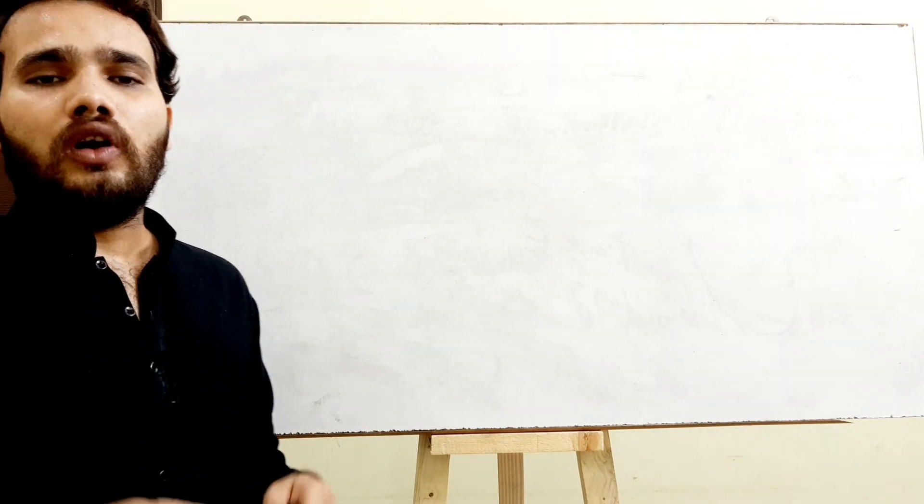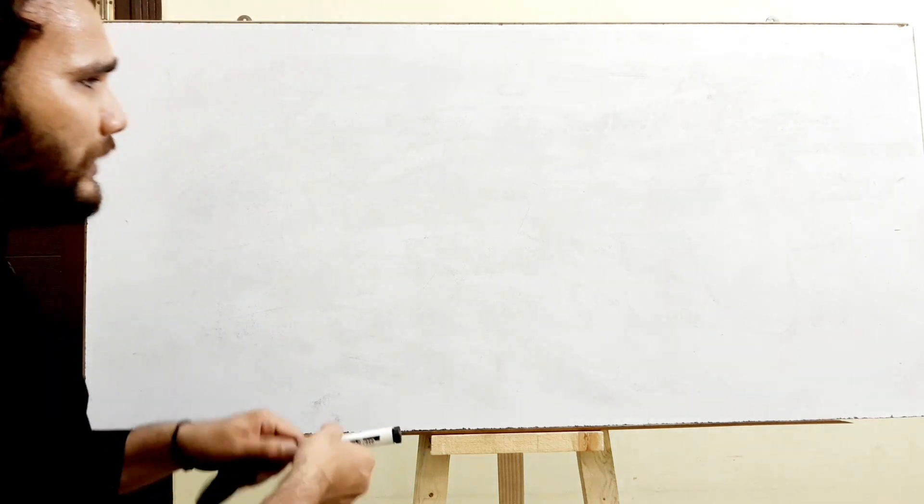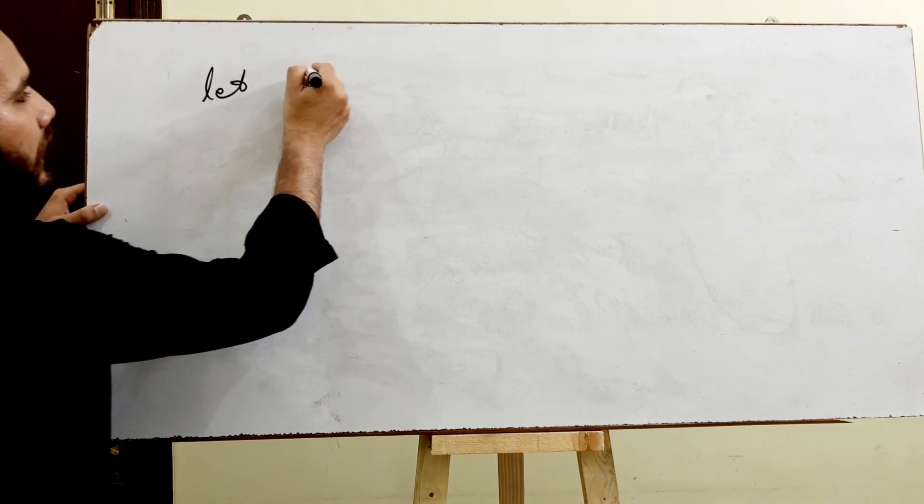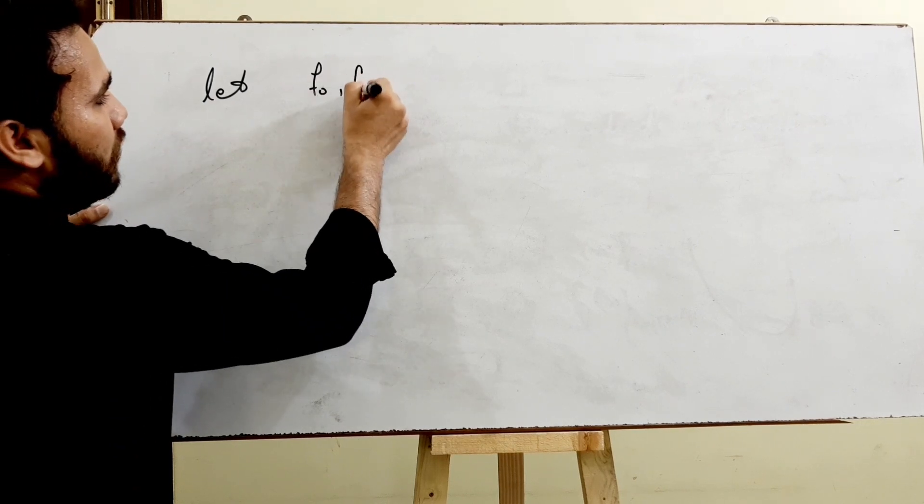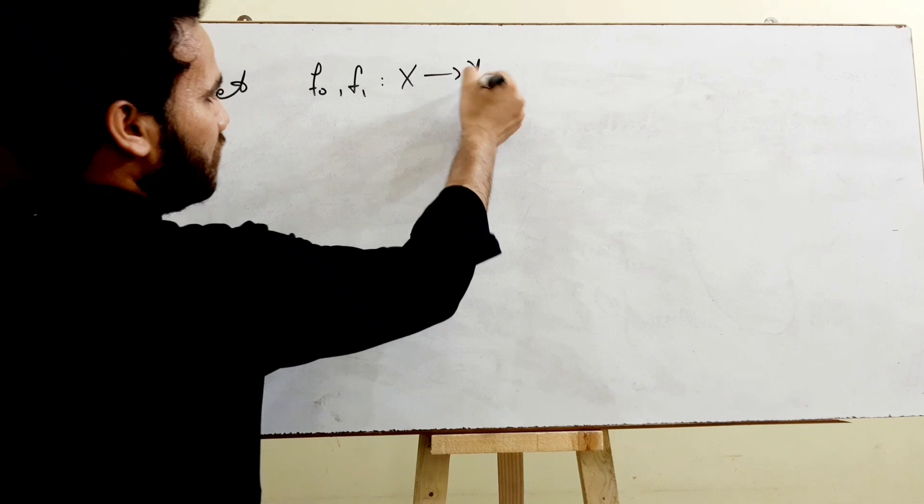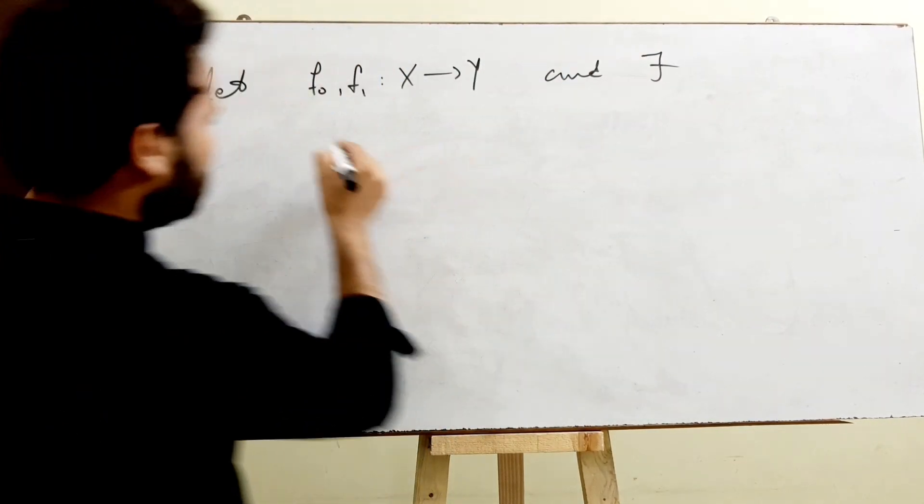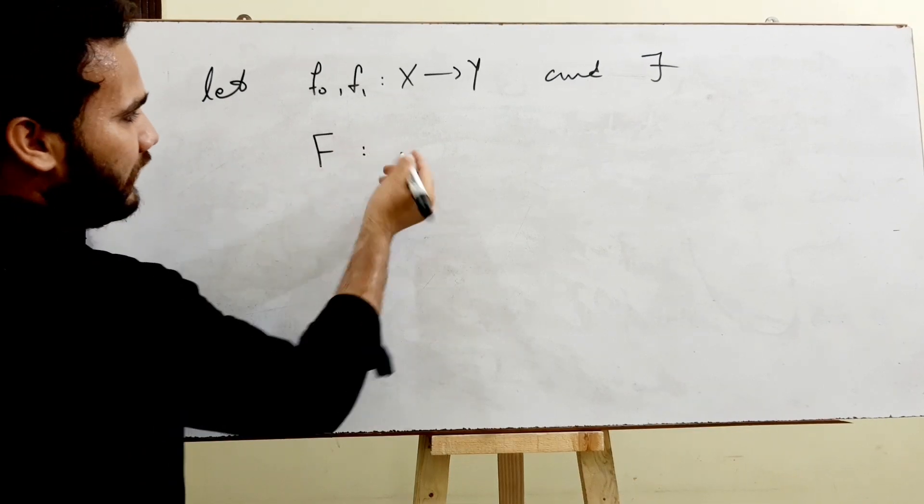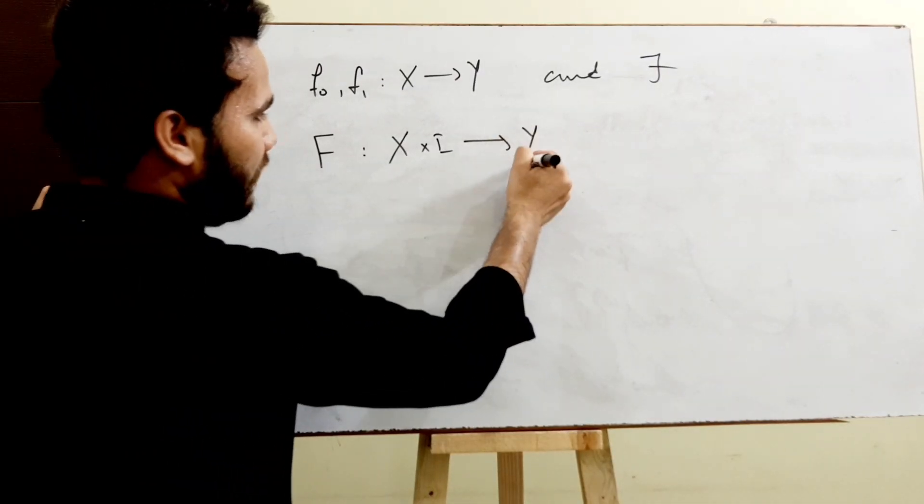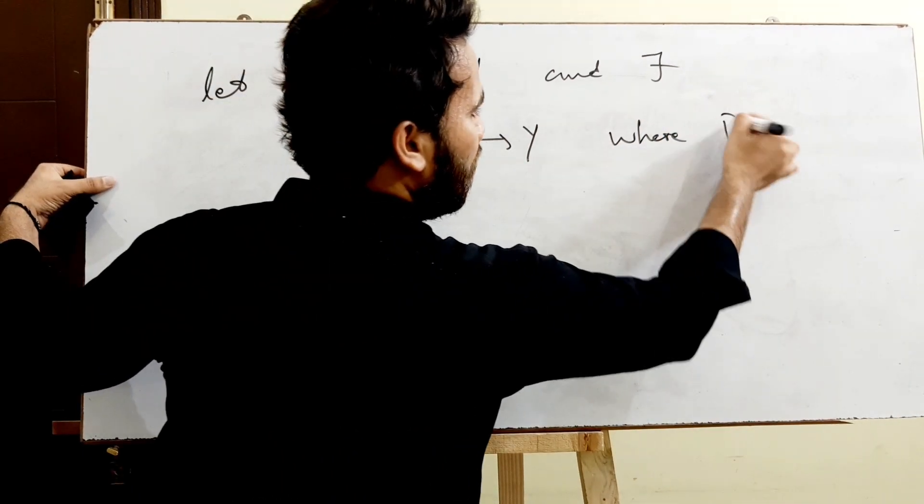Precisely, we can say that let F0, F1 be two continuous maps from X to Y. And there exists a mapping F: X × I → Y, where I is an interval from 0 to 1.